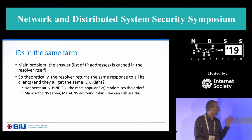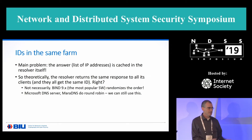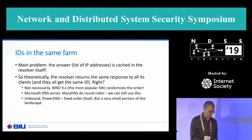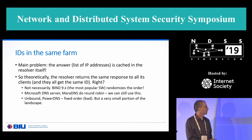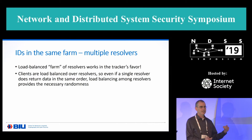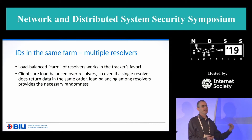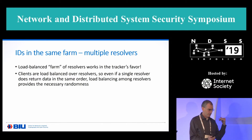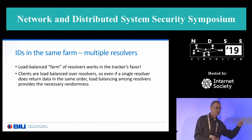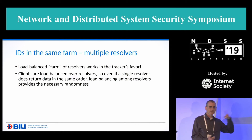Furthermore, Microsoft DNS server and MAR DNS server do round-robin. We can still use this, although it's not random, and we explain this in the paper. Our only problem is with Unbound and PowerDNS server, which have fixed order, and this is not good for the tracking technique, but they only form a very small portion of the landscape. Furthermore, if we have a load-balanced farm, the randomness introduced by the load-balancing can counteract the potential issue of having two or three resolvers which use a fixed-order list, because the randomness of the load-balancers ensures that different users go to different resolvers and get different IDs, even if those IDs are fixed per resolver.